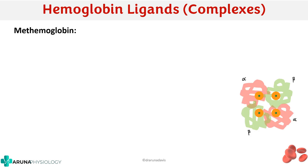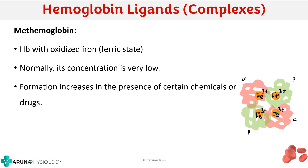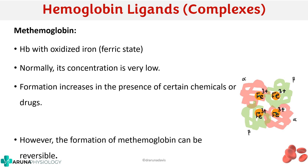Methemoglobin is hemoglobin with oxidized iron. Normally iron is in the ferrous state, but if it is in the ferric state, it is methemoglobin. Normally its concentration is very low, but in the presence of certain chemicals or drugs its formation can increase. The formation of methemoglobin is reversible. If the concentration of methemoglobin is elevated, it can mimic cyanosis — that is the important clinical aspect.